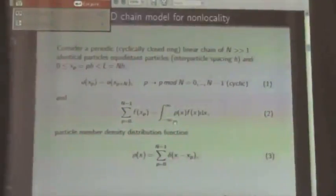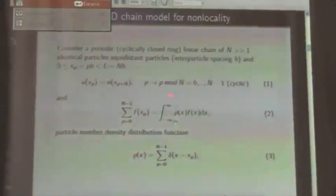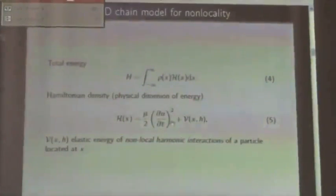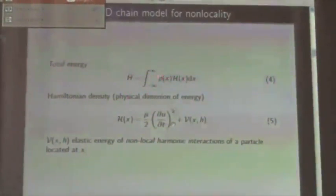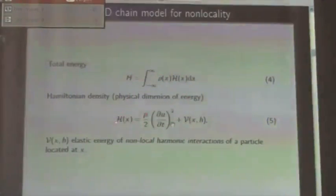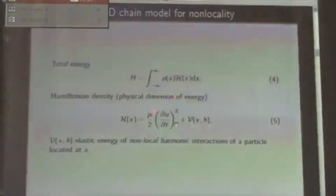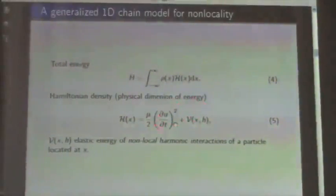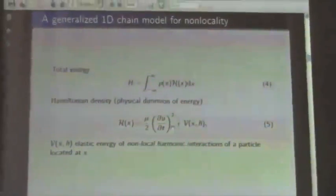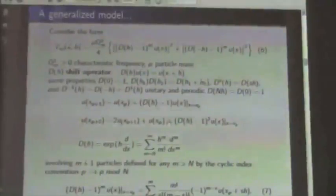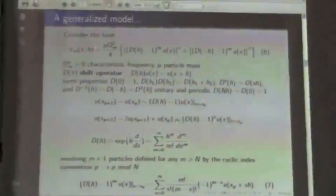We have cyclic boundary conditions, so p has to be understood as a cyclic index. When we write the total energy with this density, it can be easily written as a sum over all lattice points. h_a is the Hamiltonian density, which has a dimension of energy, because rho has a 1/length dimension. Now let's consider a lattice potential. It is very useful to define the shift operator.